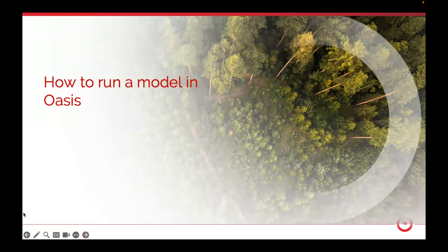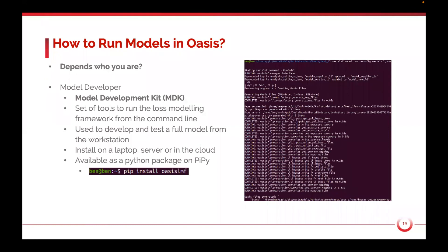We're going to go through briefly the options for how you can run models in OASIS. The options depend on who you are. If you're a model developer building models, we provide a set of tools called the Model Development Kit, which Dickie alluded to earlier. This is a set of tools to help run the whole loss modeling framework from the command line, end to end, but it also allows you to run subsections of that workflow so you can build, test, and validate your model as you go, and also get results.